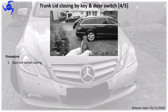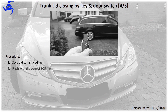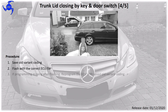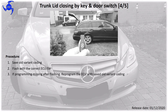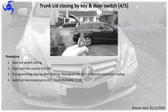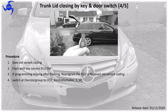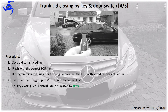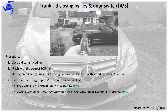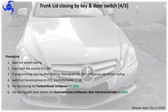The procedure looks like this: Save old variant coding. Flash with the correct ECU file. You need to pre-program the ECU file. Switch the DTS group to VCD control shelter 1 VC, and put 'Funkschlüssel schließen' to active. For closing via the door button, set 'automatisch schließen für Fahrradtürschalter' to active.